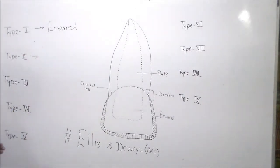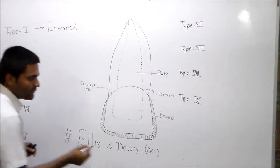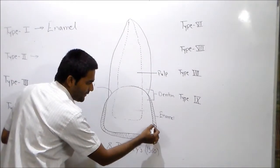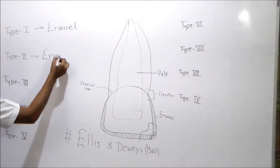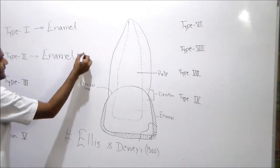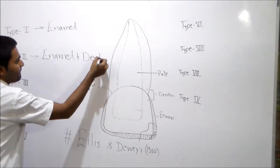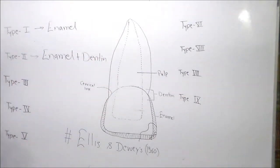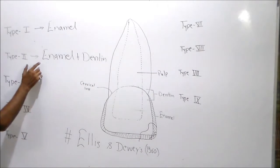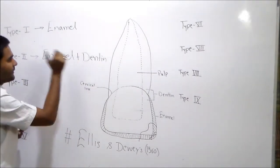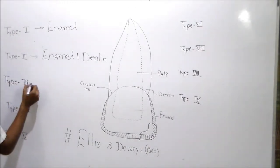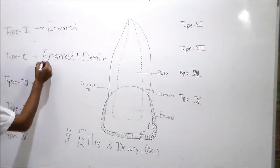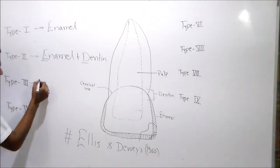Class 2 fracture, fracture involving both enamel and dentin. Enamel plus dentin. Fracture involving enamel and dentin known as type 2 fracture.